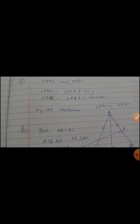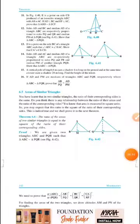Now we move on to the next question. The next question is question number 11. In figure 6.4, E is a point on line CB produced, and ABC is a triangle where BC is produced. AB is equal to AC, and we have to prove that triangle ABD is similar to triangle ECF.